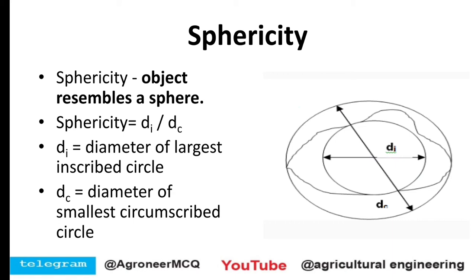The formula for sphericity is di by dc, where di is the diameter of the largest inscribed circle. For example, if you take a potato, you trace its outer boundary on graph paper and draw one inscribed circle and one circumscribed circle. Di is the diameter of the largest inscribed circle and dc is the diameter of the smallest circumscribed circle.